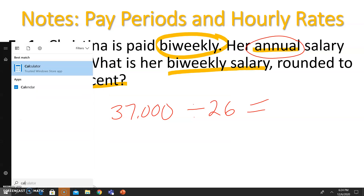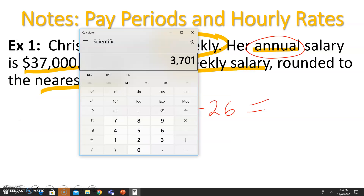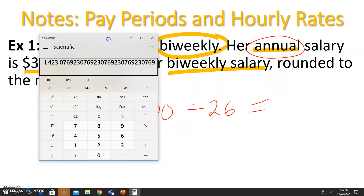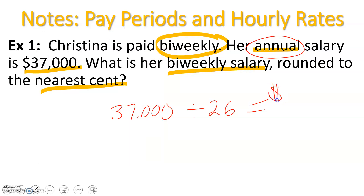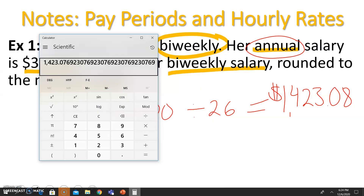$37,000 divided by 26. To the nearest cent, she will get $1,423.08 every pay period — every other week, she will take that home.